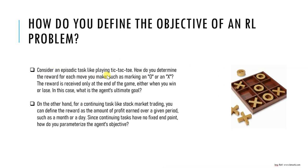The ultimate goal in tic-tac-toe is to achieve three X's or O's either horizontally, vertically, or diagonally. The RL agent's ultimate goal is to win the game by placing three marks of the same kind in a row, column, or diagonal. The agent receives a positive reward of plus one for winning, a negative reward of minus one for losing, and no reward for a draw or continuing the game.